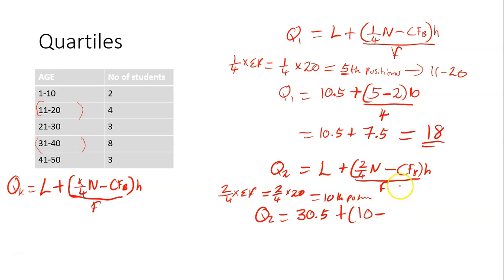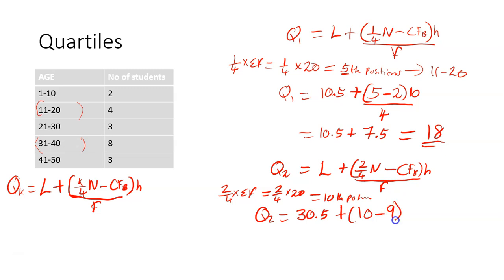Minus the CFB — that means the cumulative frequency of the class before the second quartile class. Before this particular class, the cumulative frequency is 2 plus 4 plus 3, which is 9. So we substitute 9 there.